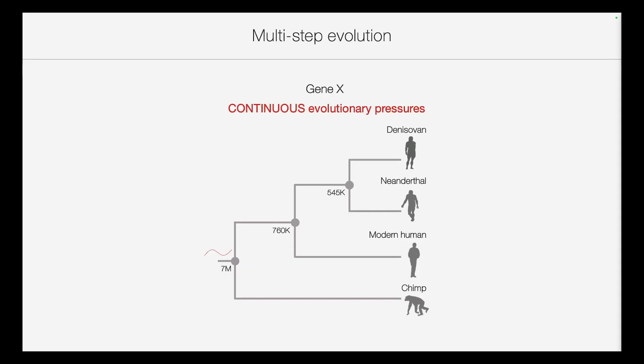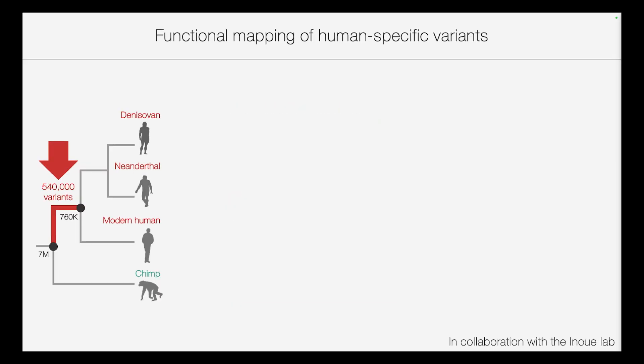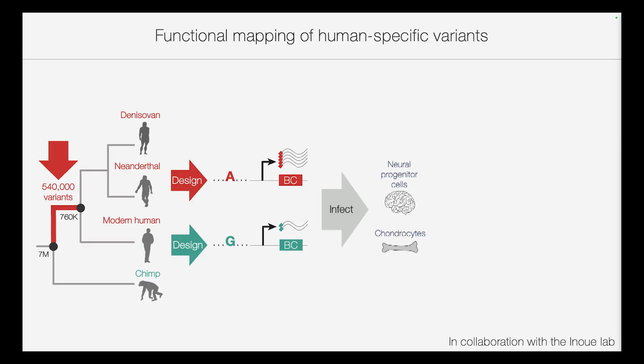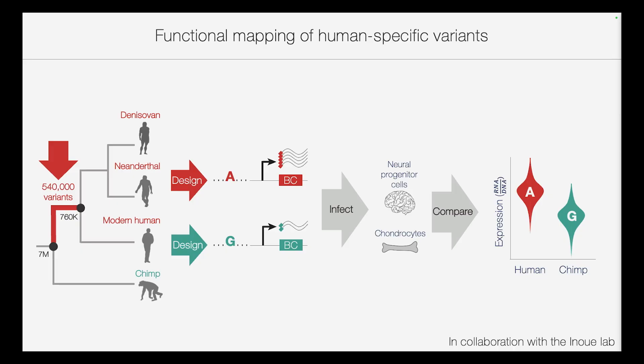We can also look for continuous evolution — many steps accumulated over hundreds of thousands or even millions of years, where we expect to see the same direction of effect across many changes along these lineages. To do so, we took the 540,000 variants that separate all human lineages from our extant living relatives, the great apes. For each variant, we designed the human version and the ancestral version, then infected them into two cell types: neural progenitor cells representing the brain, and chondrocytes for the skeleton, looking for variants that alter gene expression.